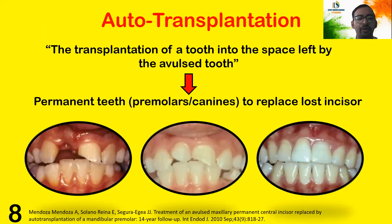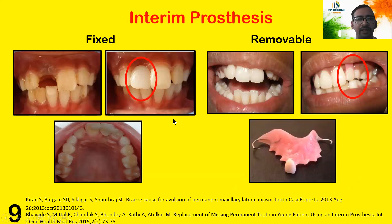For auto-transplantation, the tooth is transplanted into the space left by the avulsed tooth. A permanent premolar or canine can be used to replace it. As you can see in the figure, tooth 11 is missing and a premolar has been auto-transplanted in place of 11, and later reshaped to a central incisor. Another option is a fixed cantilever bridge given with the help of a fiber splint, and there is also a removable prosthesis option.